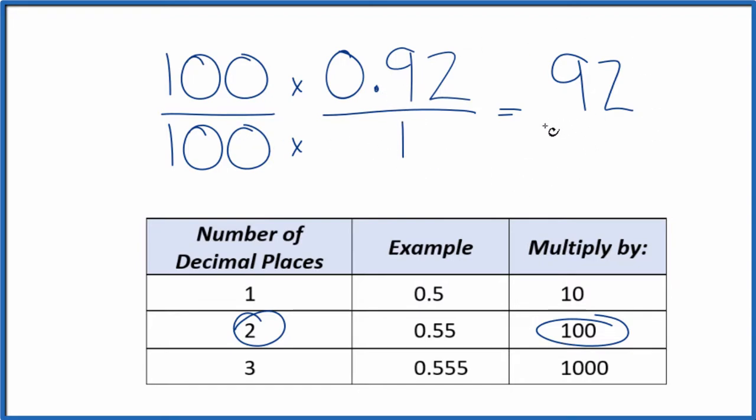100 times 1, that is 100. And we have our fraction, 92 over 100. So we've converted the decimal 0.92 to the fraction 92 one-hundredths. We could simplify this a little bit further.